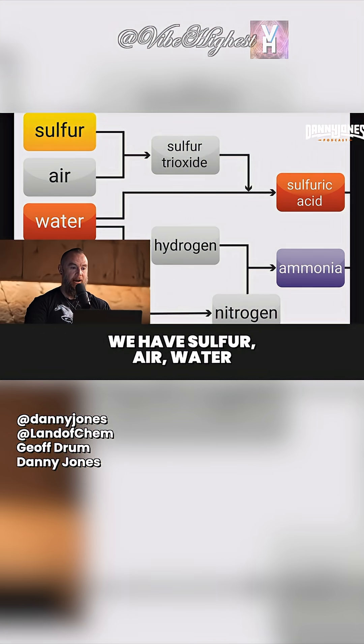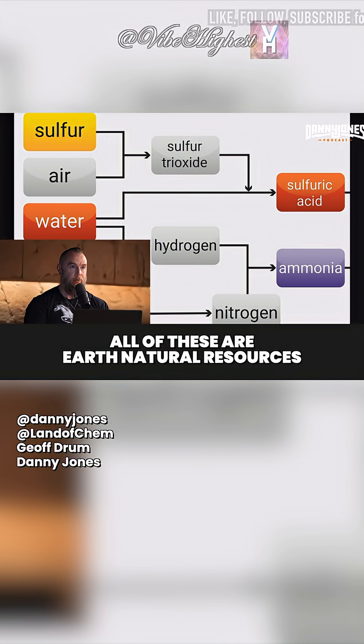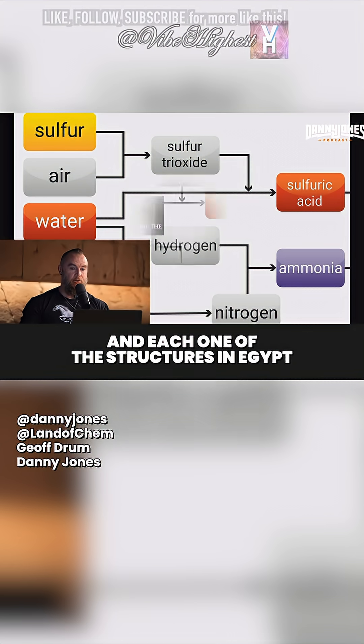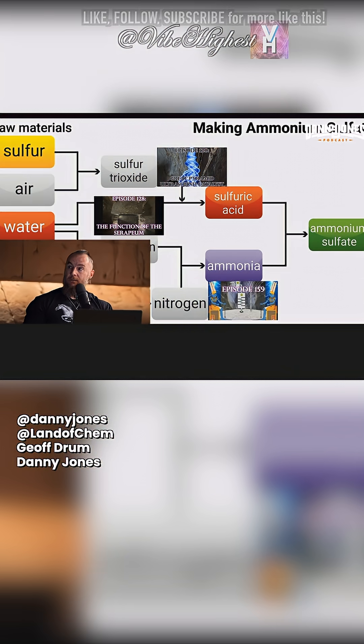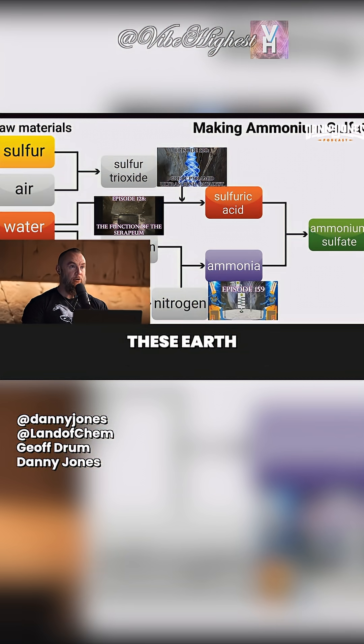For example, we have sulfur, air, water, and natural gas — all earth natural resources. Each one of the structures in Egypt was designed to harness these earth natural resources.